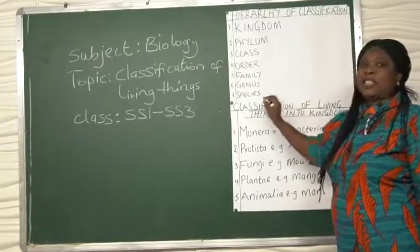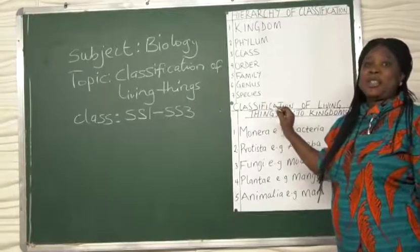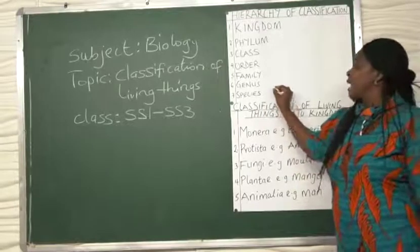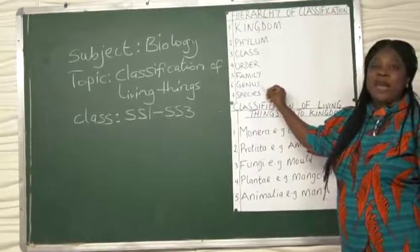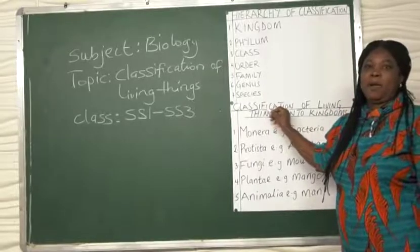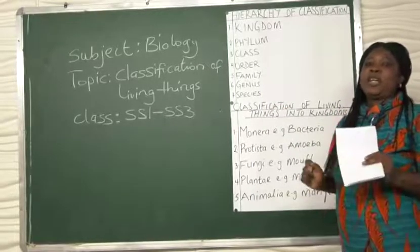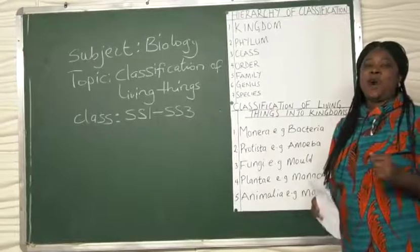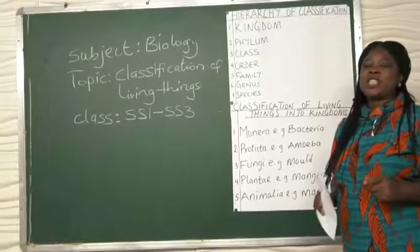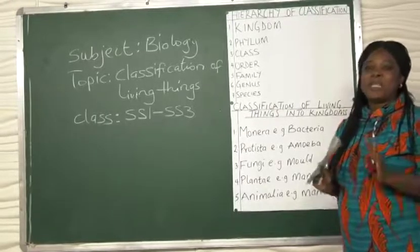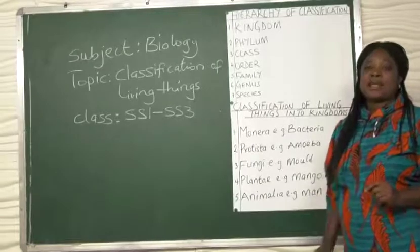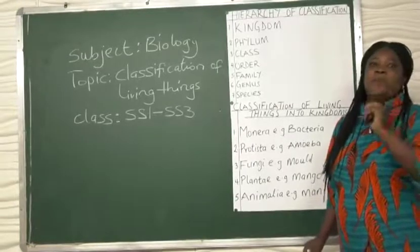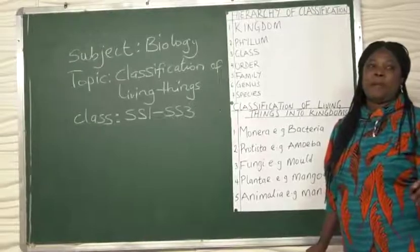The classification into genus and species is like the first name and the surname. When you give the genus and species name, that is very specific. Once you mention that every biologist knows the organism you are talking about.